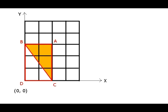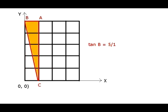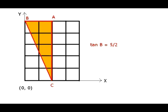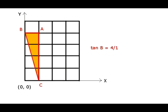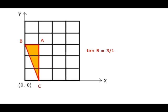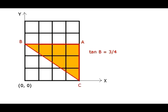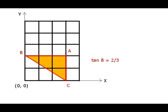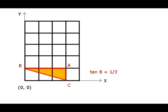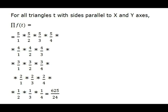Now let us look at each such triangle, calculate tangent of angle B, and multiply these numbers. We skip the isosceles triangles since tangent of angle B equals 1 for them. The tangent values are: 5 to 1, 5 to 2, 5 to 3, 5 to 4; then 4 to 1, 4 to 2, 4 to 3; then 3 to 1, 3 to 2, 3 to 4; then 2 to 1, 2 to 3, 2 to 4; and finally 1 to 2, 1 to 3, and 1 to 4. The product equals 625 over 24.